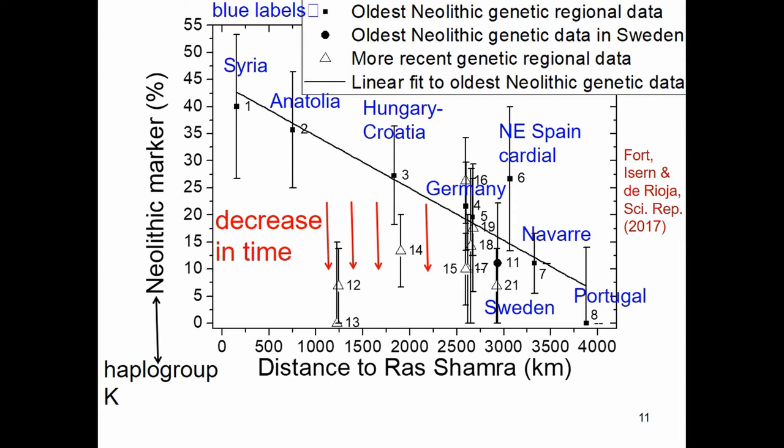The frequency of the Neolithic marker decreases as the Neolithic wave expands. For the triangles — which represent more recent genetic data — values are generally higher, so frequency increases over time. This is expected, because in our model only farmers can interbreed with or incorporate hunter-gatherers. Since no hunter-gatherer in Europe has been found with haplogroup K, as hunter-gatherers are incorporated, the frequency of haplogroup K among the farming population decreases.